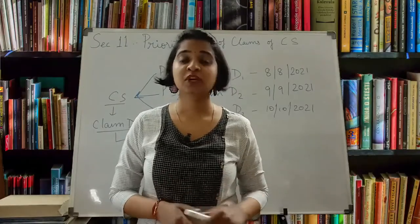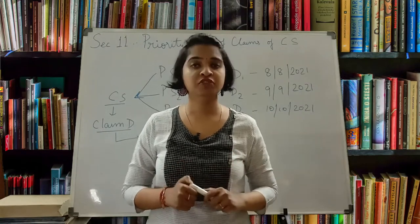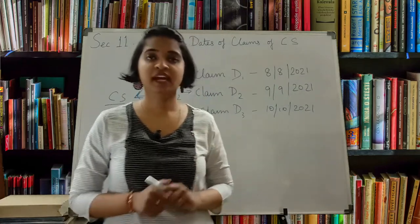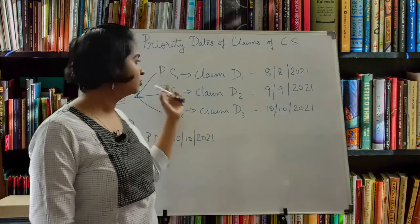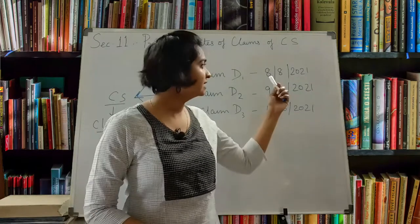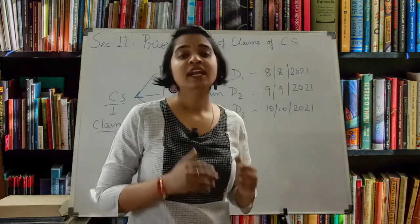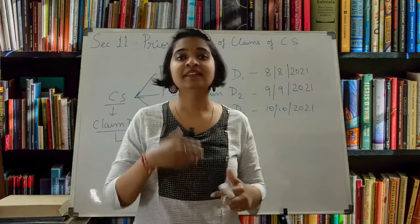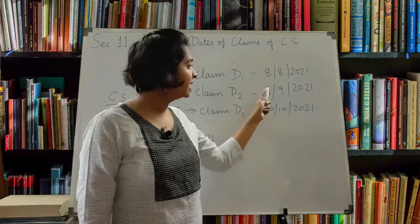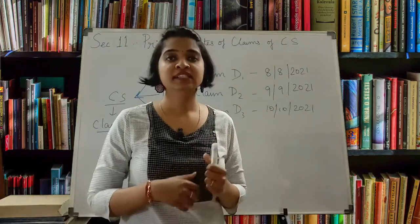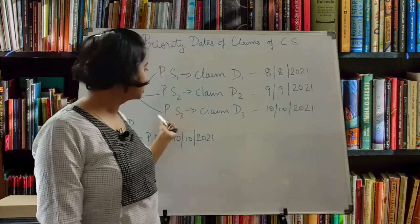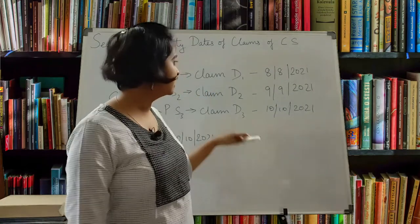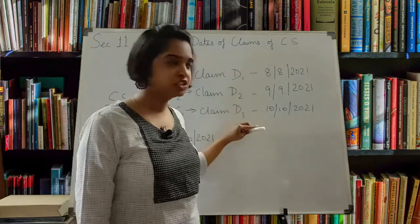Now let's see an interesting scenario. Generally, the day you file the provisional specification mentioning a claim is your priority date. But consider this: you file a provisional specification with Claim D1 on 8-8-2021. Within one month you find changes and file a revised claim as Claim D2 on 9-9-2021. Again you find changes, remodel it, and file Provisional Specification 3 with Claim D3 on 10-10-2021. You have to note that all three relate to the same invention and the same underlying claim D.